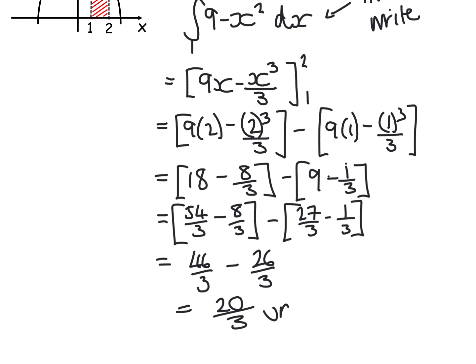And you can leave it as 20 thirds. And because we're talking area, it has to be units squared. Sometimes they'll mention in the question, if it's in context, whether it's metres squared or centimetres squared. But in the absence of any units, you just write units squared. So you find the area of that little curved shape. How cool is that?